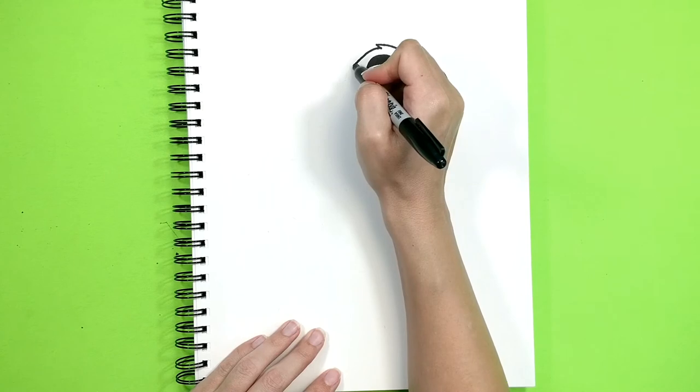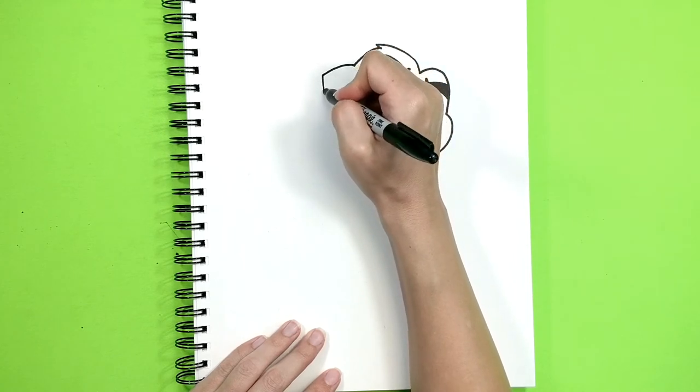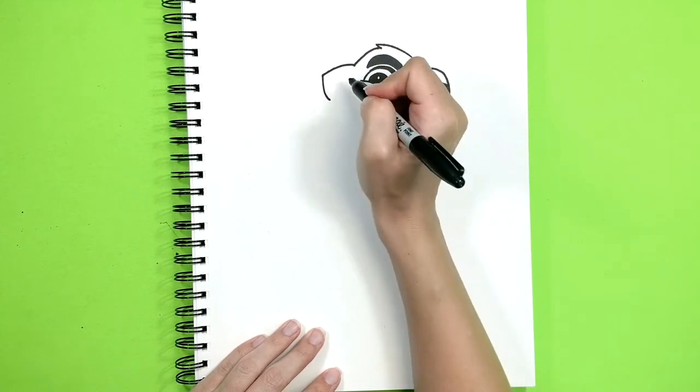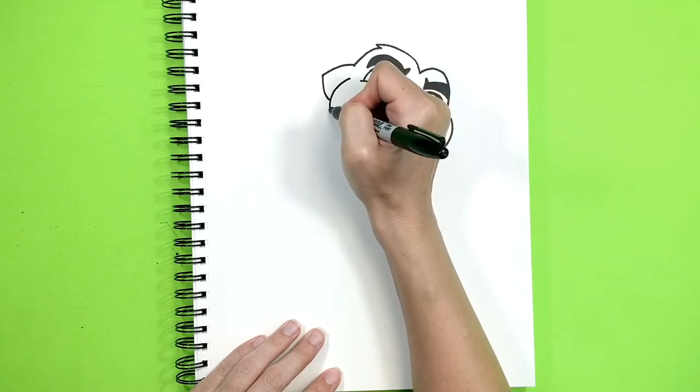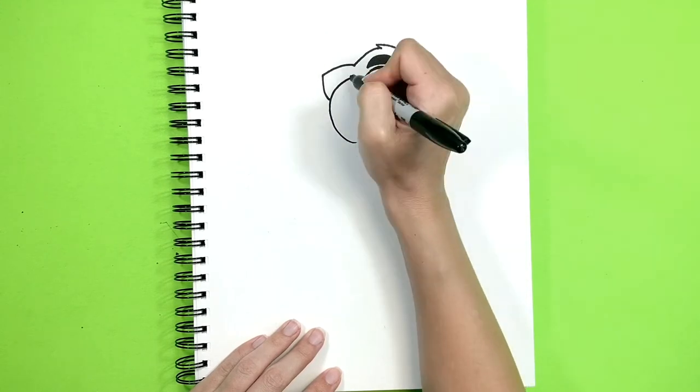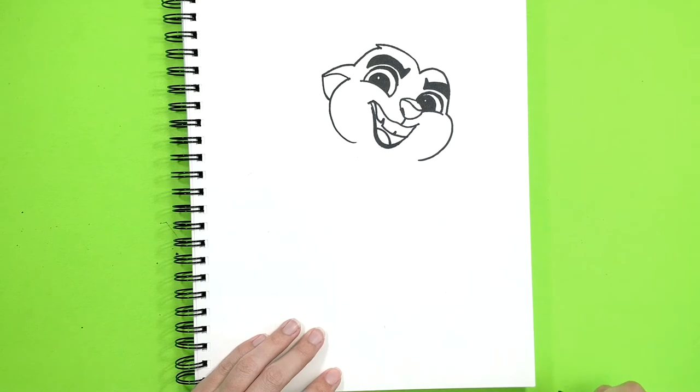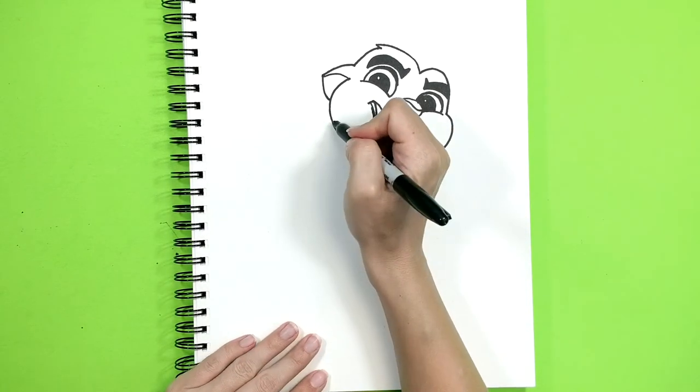And a second cheek. Here we go, this is done. Now let's do his arms. Let's start with the left one. So start somewhere closer to the...